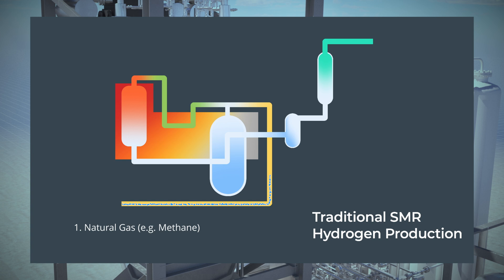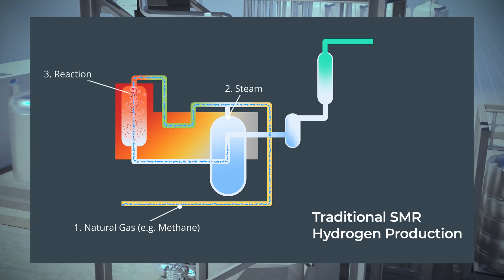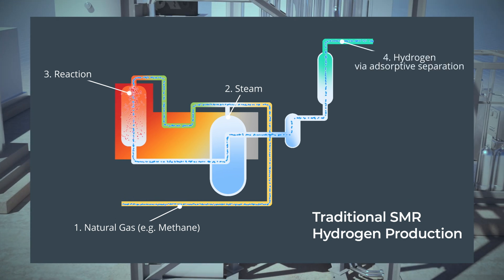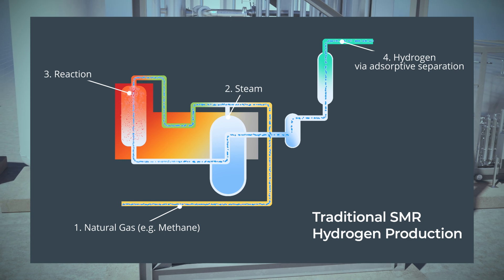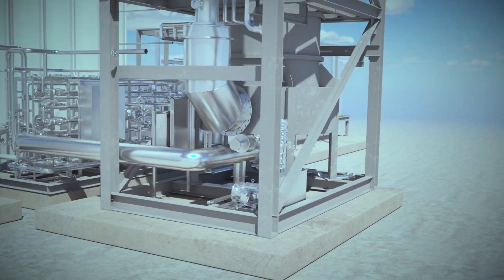In steam methane reforming, methane reacts with the steam under pressure in the presence of a catalyst to produce hydrogen. This reaction requires a high amount of heat. In a traditional SMR reactor, there's inefficient heat transfer into the reactors while the excess produces steam.